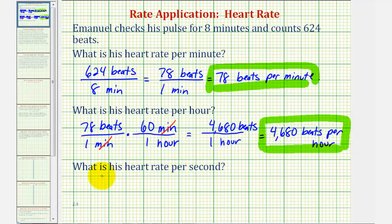And then finally we want to find the rate per second. So we can start with any rate. Let's go ahead and start with this rate here, of 78 beats per one minute. So if we start with 78 beats per one minute, we want to convert this to beats per second. And because there are 60 seconds in one minute, we could divide 78 by 60 to determine the rate per second.